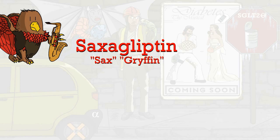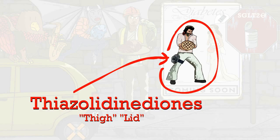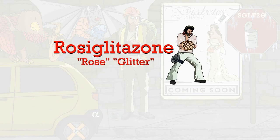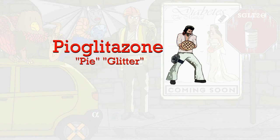This next class of drugs is a mouthful — the thiazolidinediones, which is represented by the thigh lid on the glittery man in the poster. Examples are rosiglitazone and pioglitazone, which are represented by the glittery man's rose and pie, respectively.